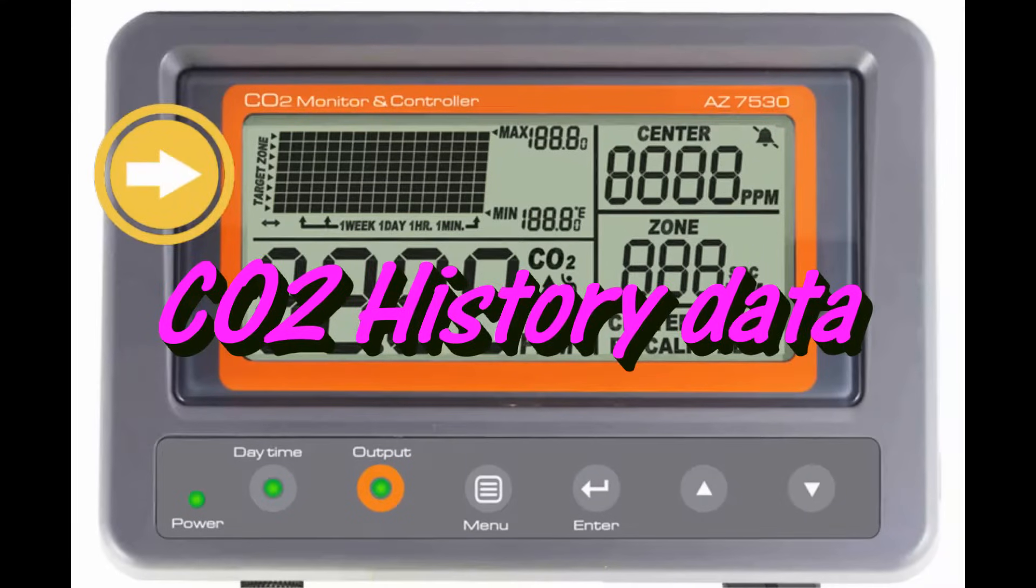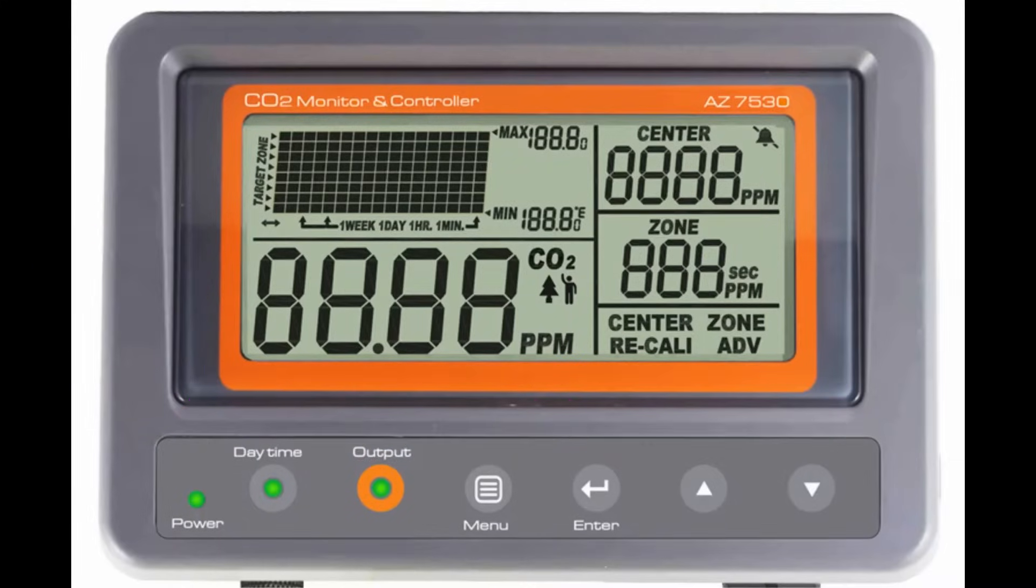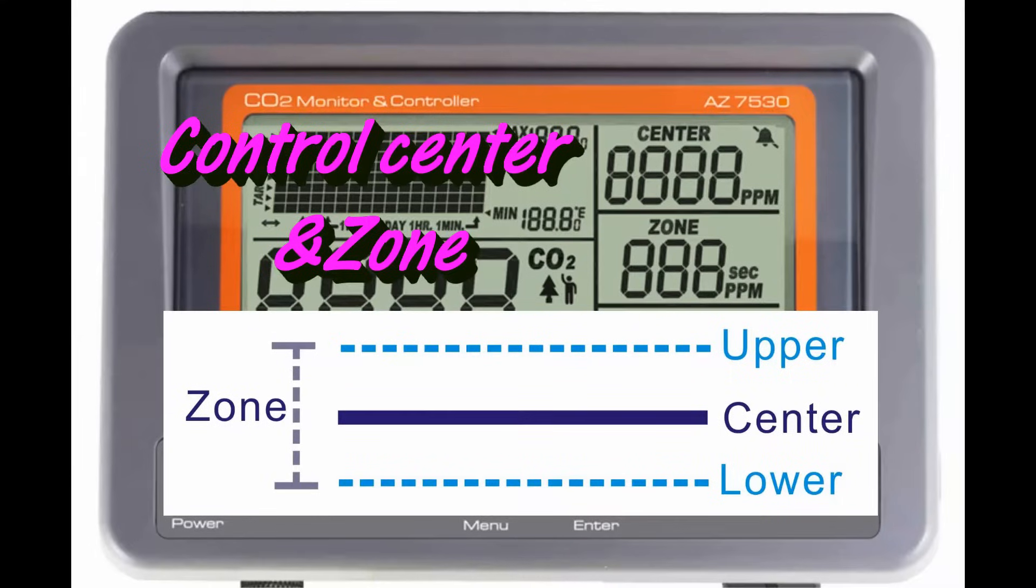The scale of CO2 history curve could be switched from hour to week. The real-time CO2 value could be displayed as well. The controlling center and zone values are displayed on the right-hand side of display.